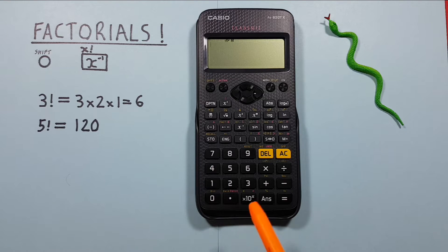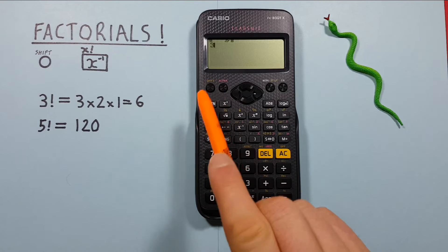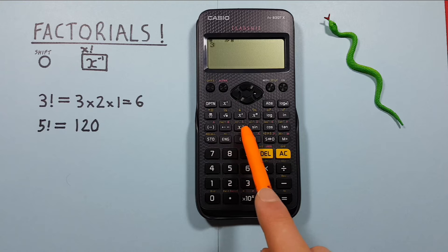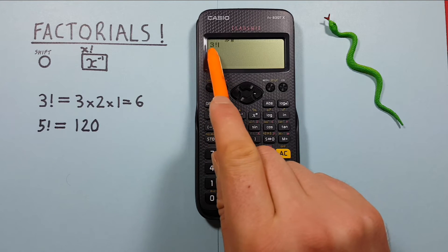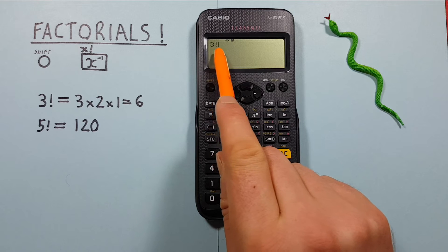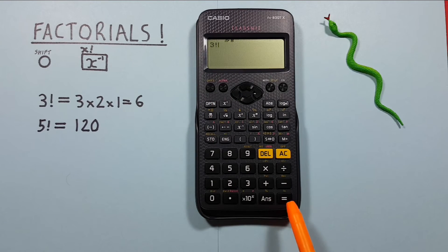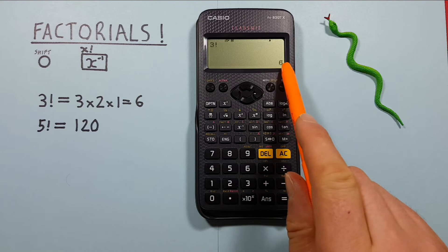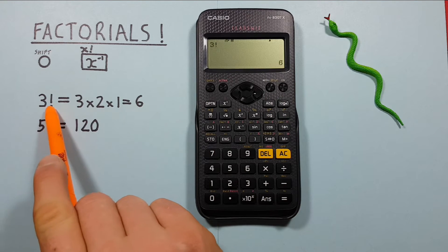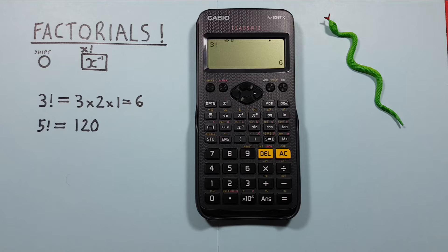To solve this on our calculator we place the 3 on the screen and then press shift and then that x inverse key with the shift function of factorial and we see the exclamation mark or factorial symbol appear next to the 3. We press equals and see we get a result of 6. So 3 factorial is equal to 6 which is correct.